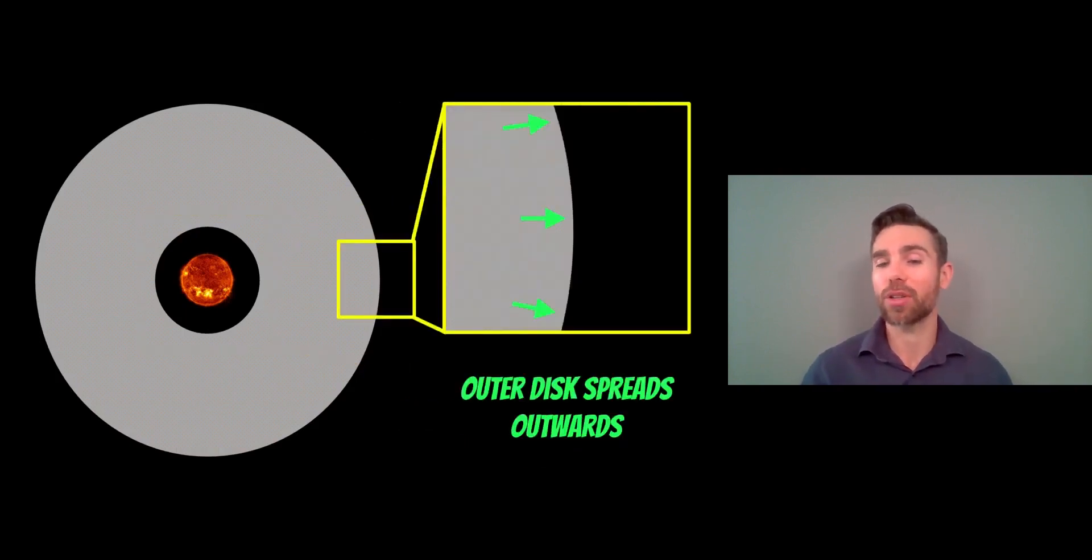If it's in the outer part of the disk, the outer part of the disk is actually spreading outwards and the planet will then move outwards. So in type 2, you can actually get inward and outward migration, whereas type 1, it's mostly an inward migration. Type 2, it depends where it's located in that disk to where it's going to move inwards or outwards. It just relates to the evolution of the disk itself.